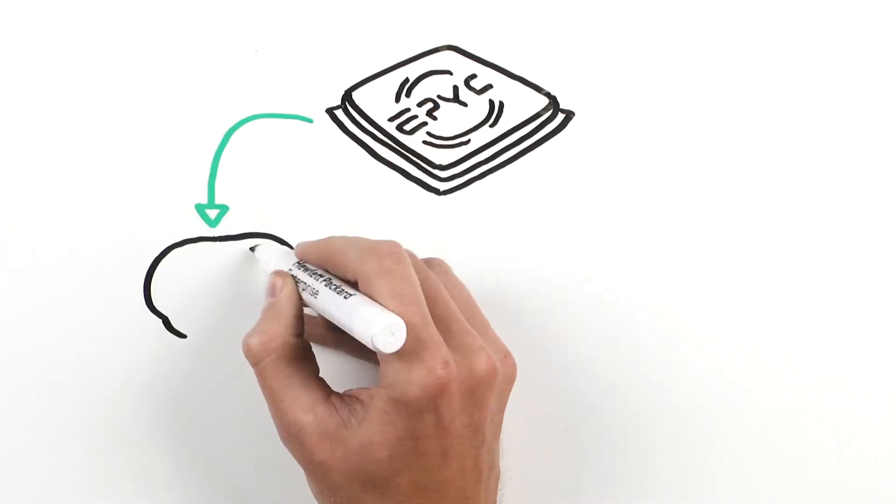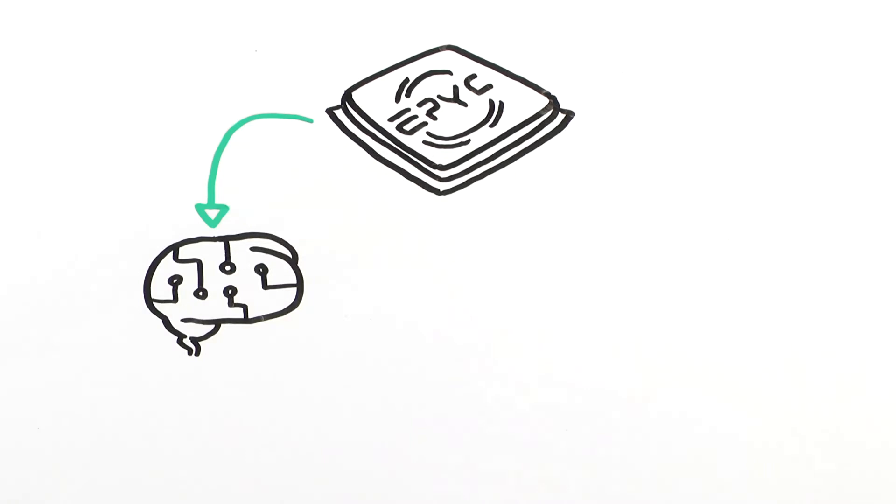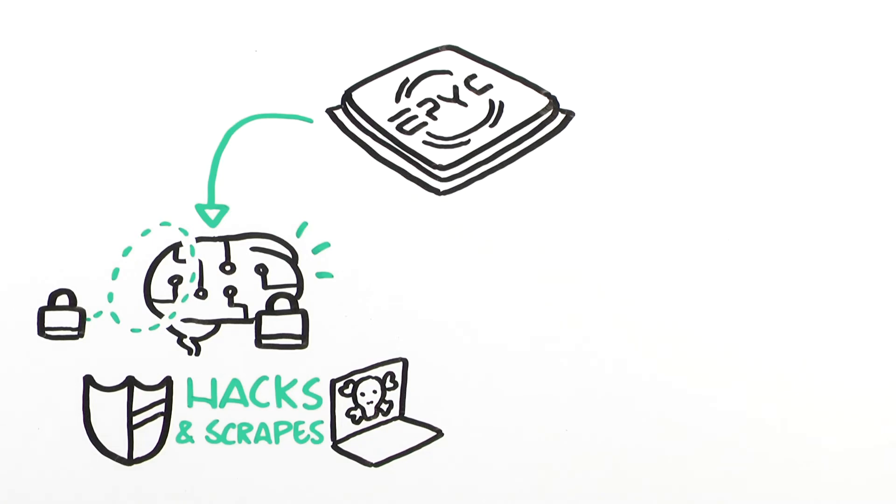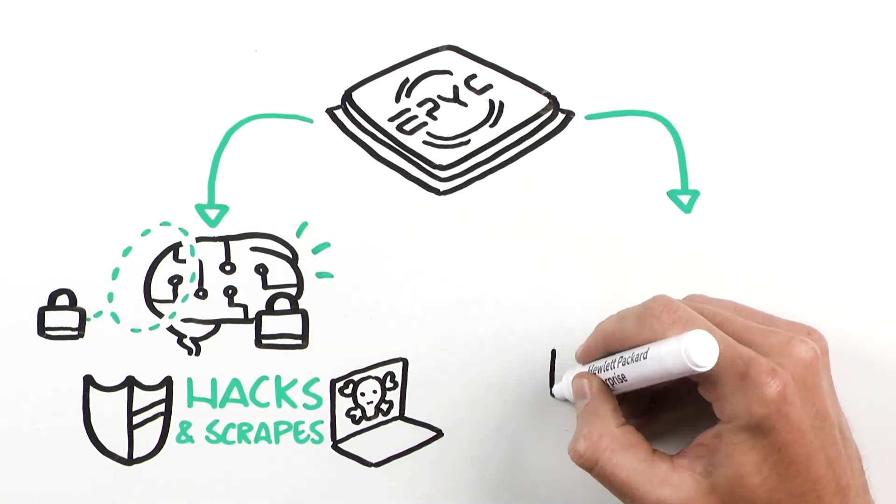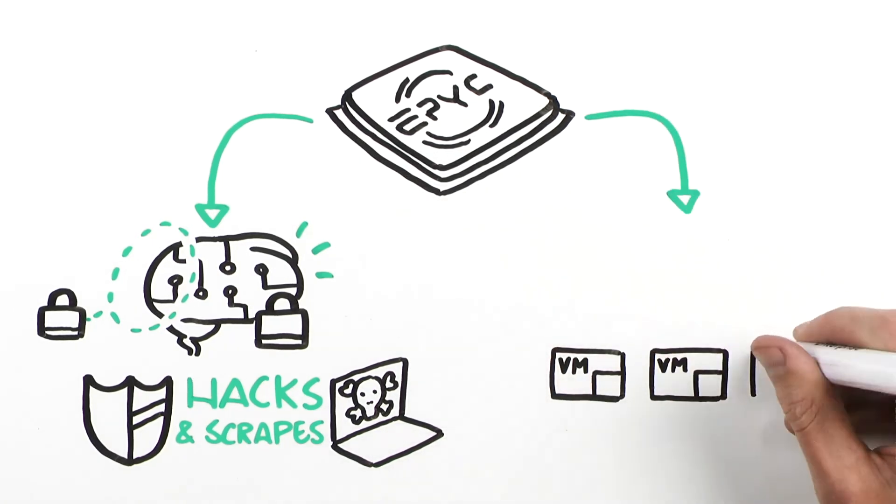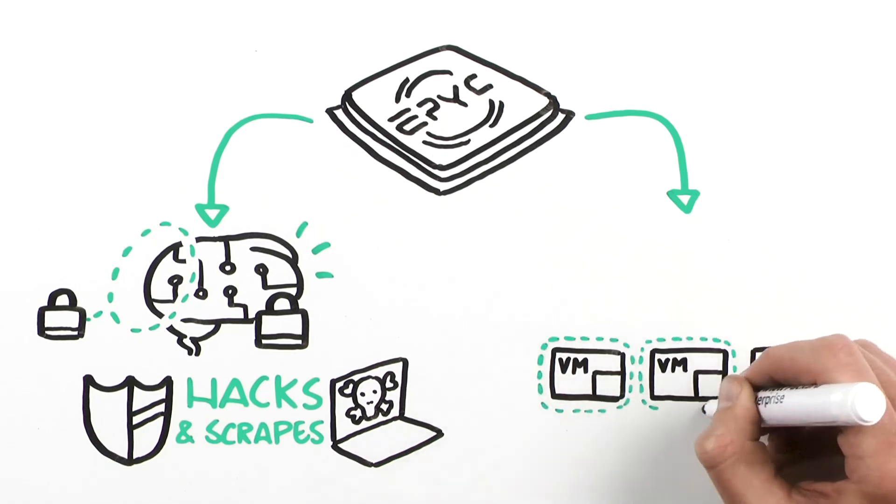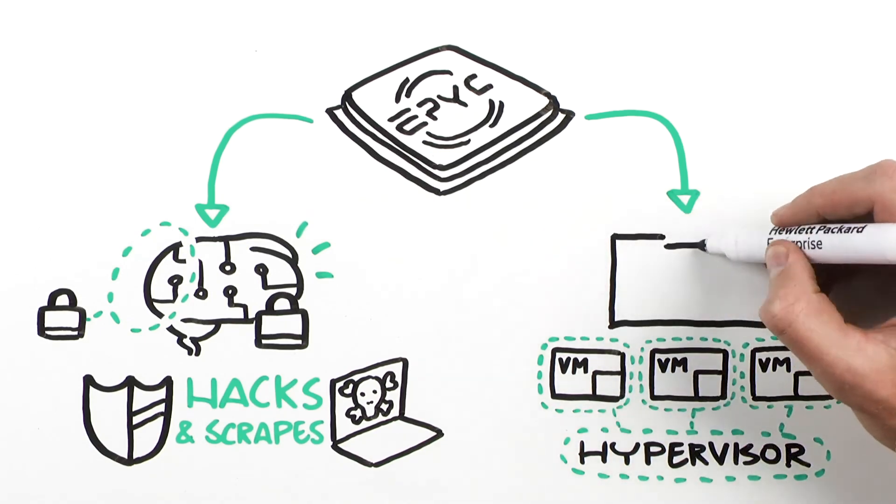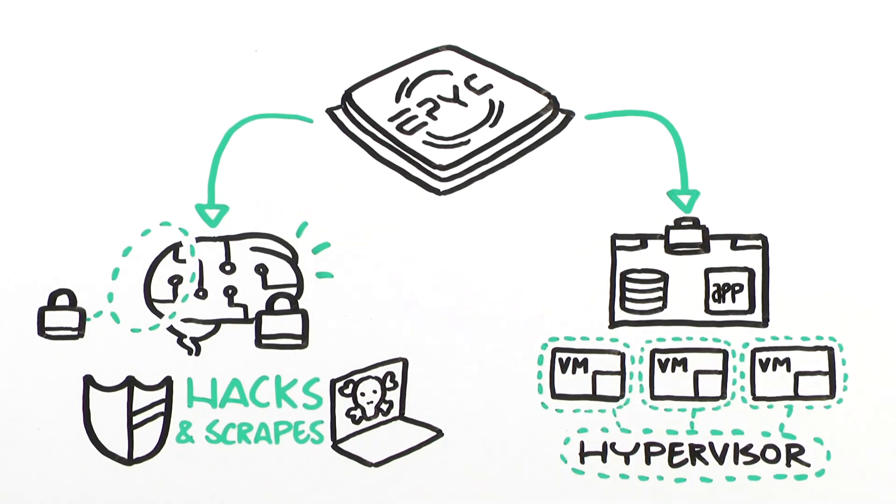As if that weren't enough, AMD EPYC provides secure memory encryption and secure encrypted virtualization. With secure memory encryption, you can encrypt all of the memory or a portion to protect against memory hacks and scrapes. Secure encrypted virtualization allows you to cryptographically isolate virtual machines from other virtual machines, even the hypervisor itself, protecting virtual machines from each other, from admin tampering, and even untrusted hypervisors.